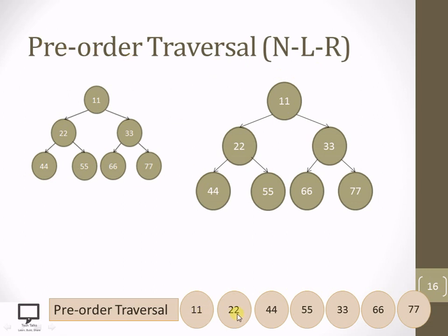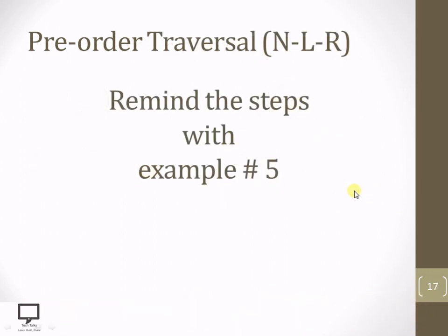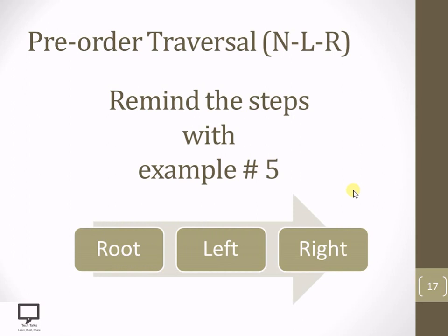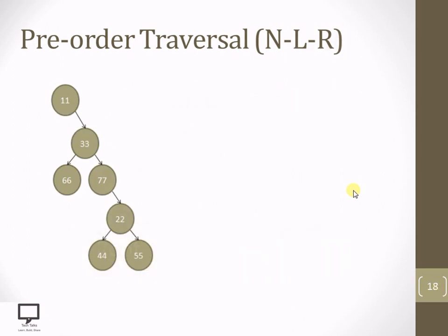You can check whether your traversal is correct. If it is not correct, please listen to the video again to understand when to move forward, when to go backward, and when to process the root node — you will understand what mistake you made. With these many examples, I hope you will be able to traverse any given binary tree in pre-order traversal.